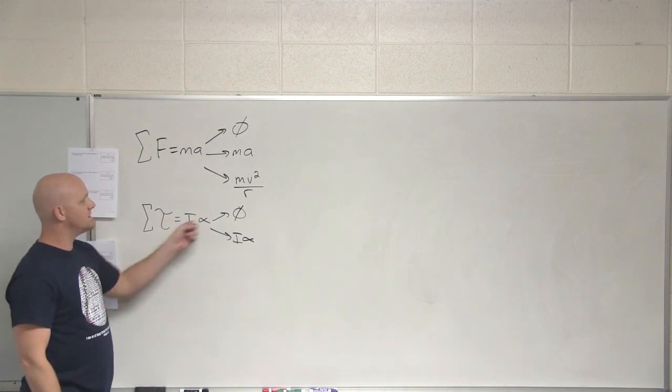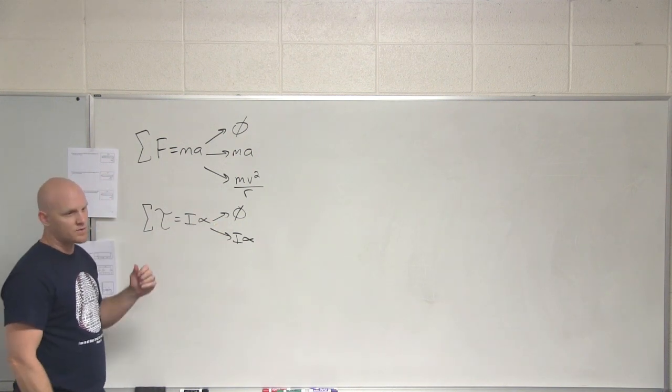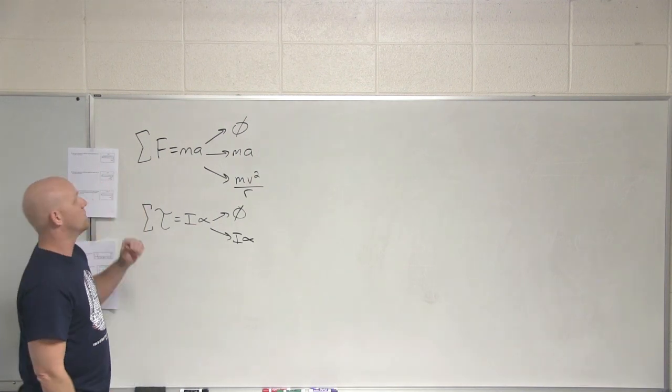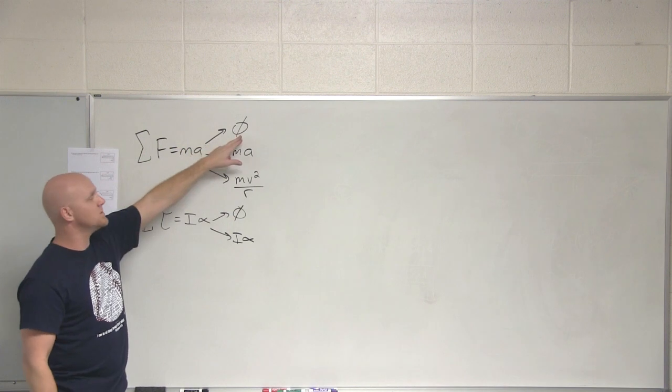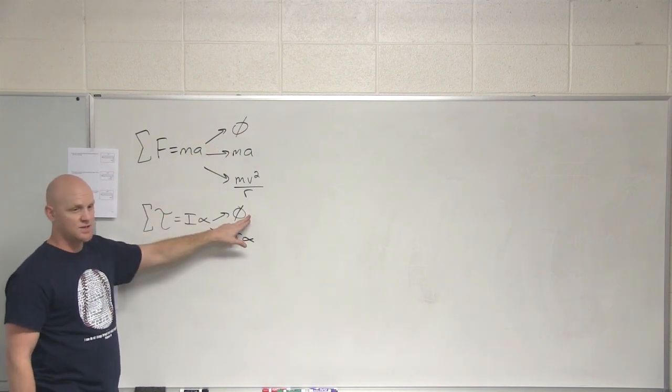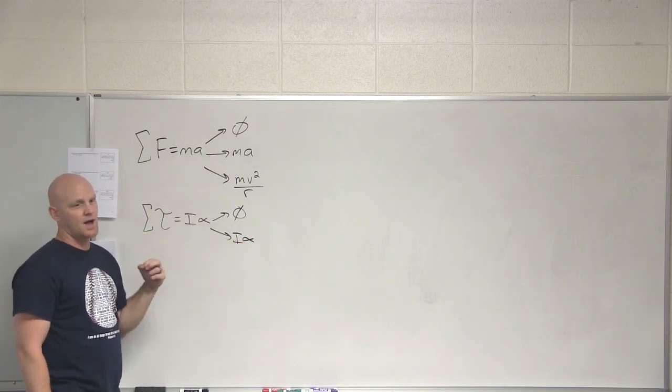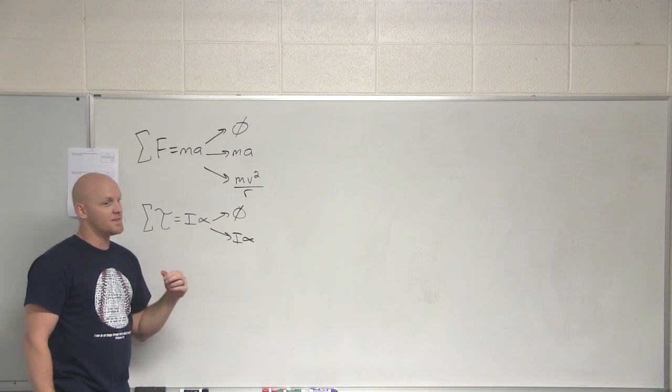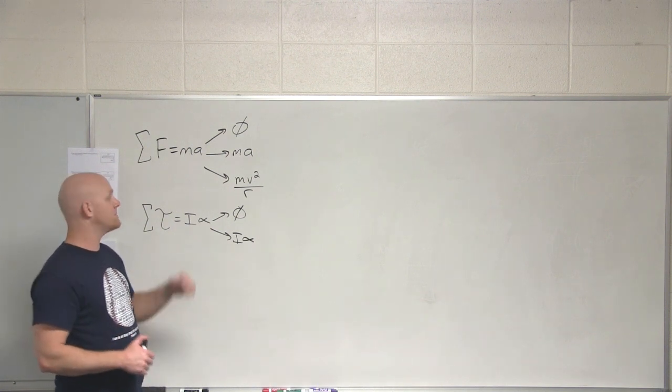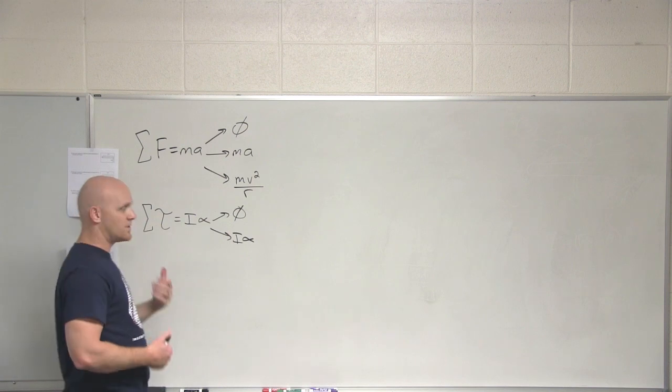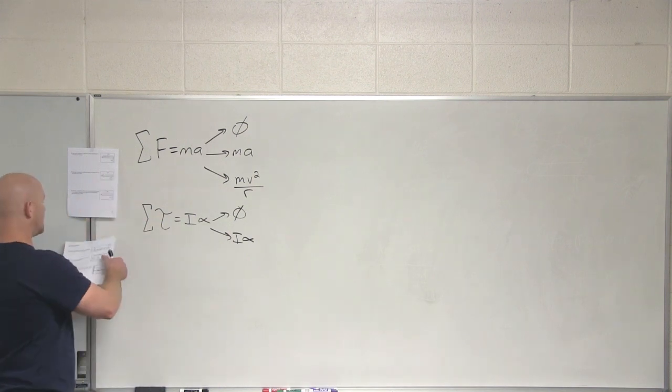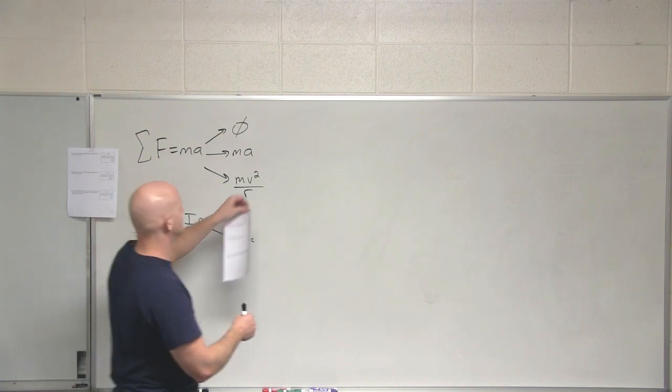So this is a new condition for equilibrium. It turns out in a rotational sense, for objects that might rotate, we actually now have two conditions for equilibrium. The sum of the forces must equal zero, and the sum of the torques must equal zero. For an object at equilibrium, both of those conditions must be met. Let's look at some examples of classic torque problems involving equilibrium.